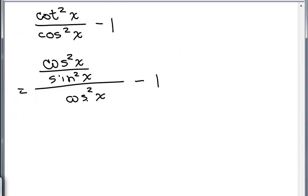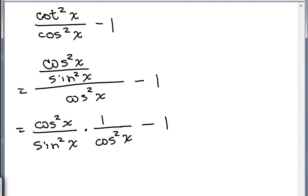Now I'm going to multiply this by the reciprocal, this cosine squared x over sine squared x, and I'm going to multiply by the reciprocal of cosine squared x, so that's times 1 over. Remember, if you're dividing by cosine squared x, you are multiplying by 1 over cosine squared x. Then I have minus 1.